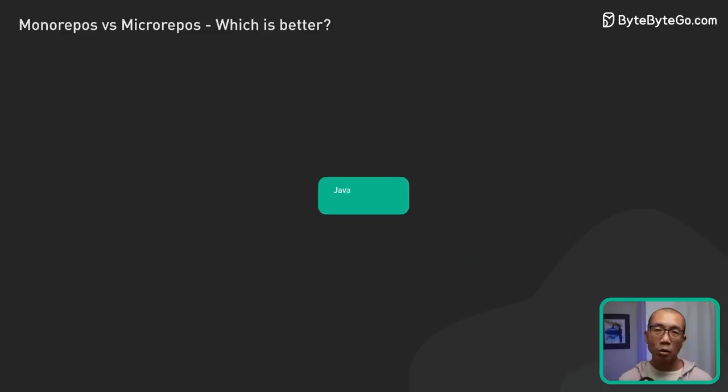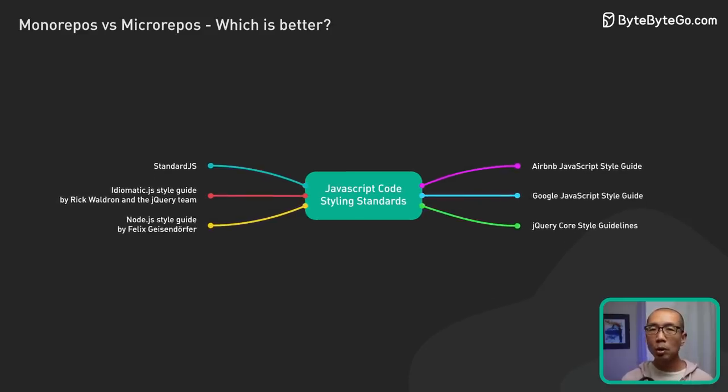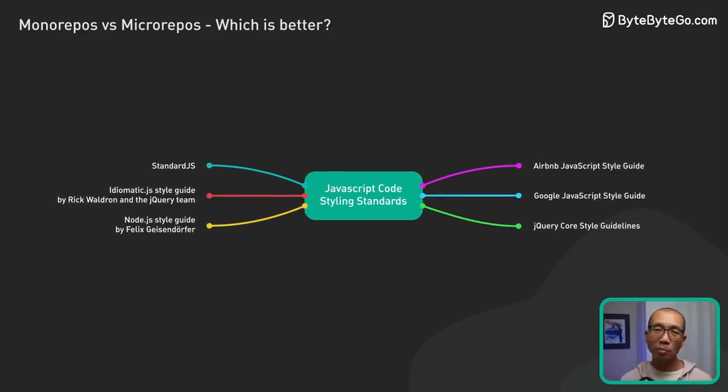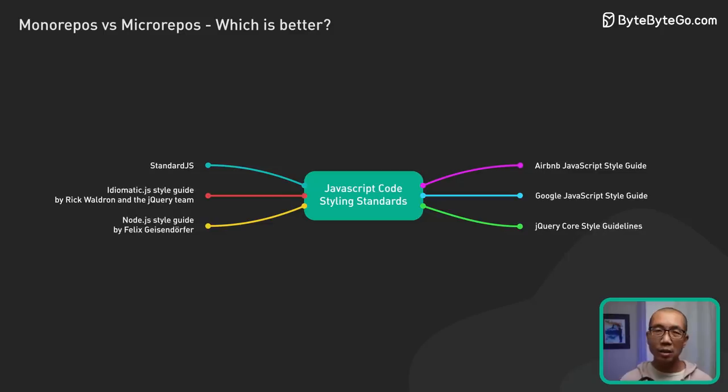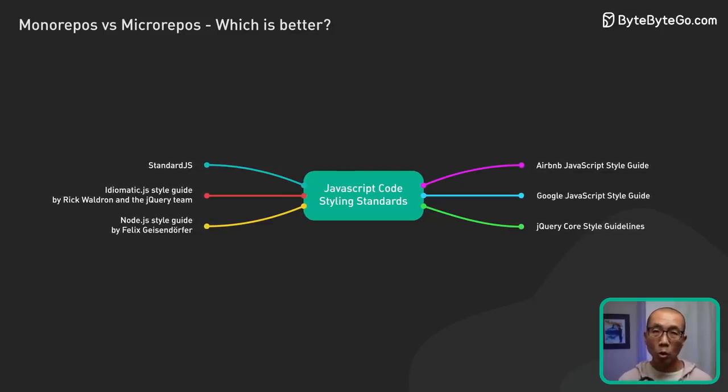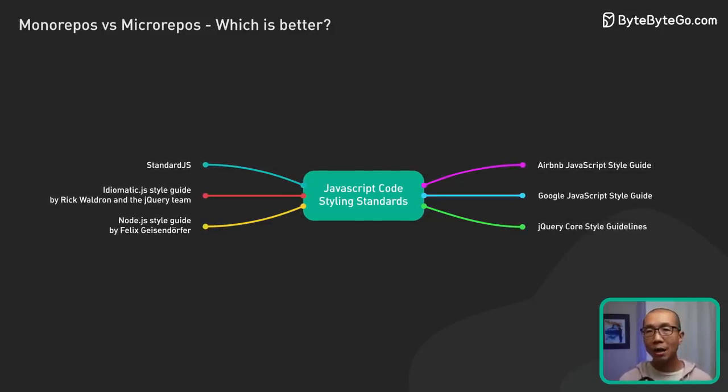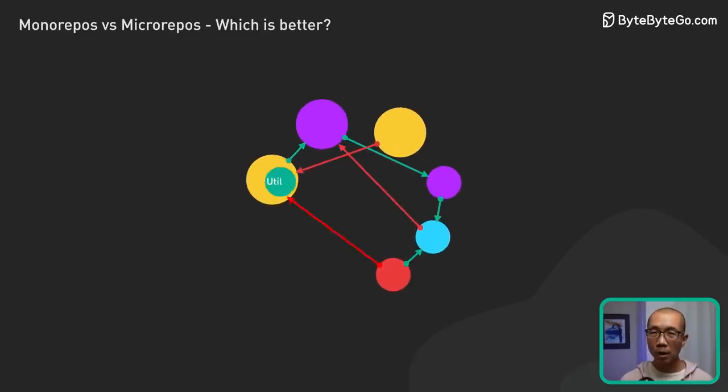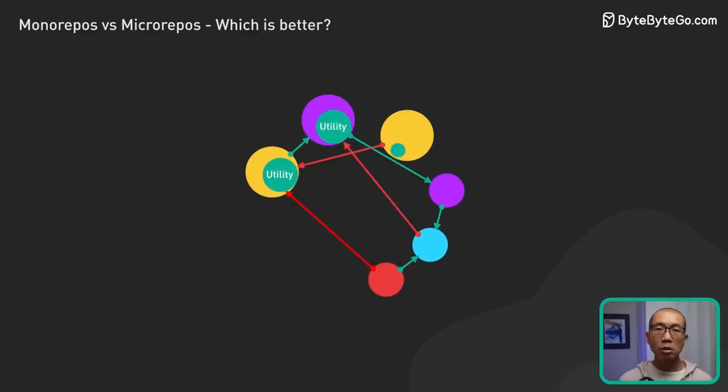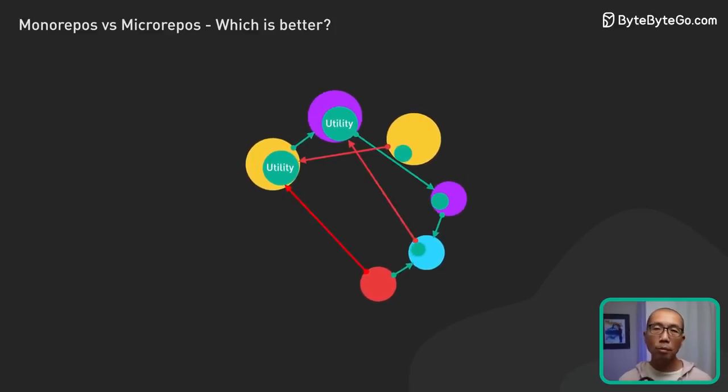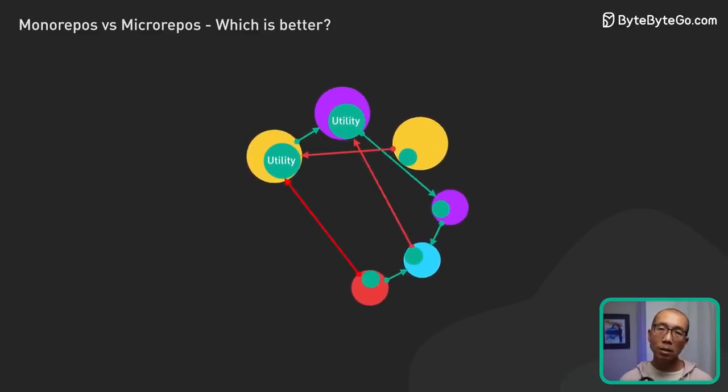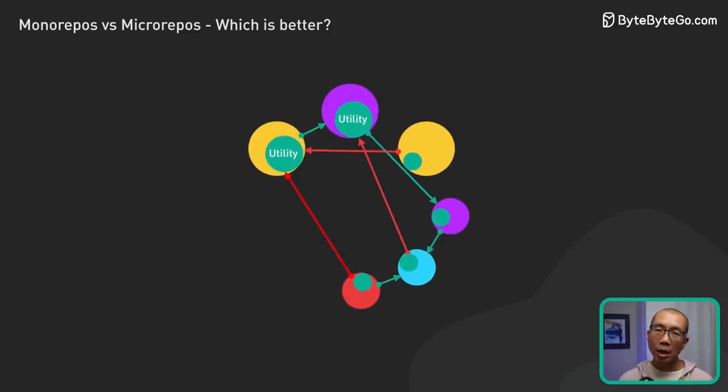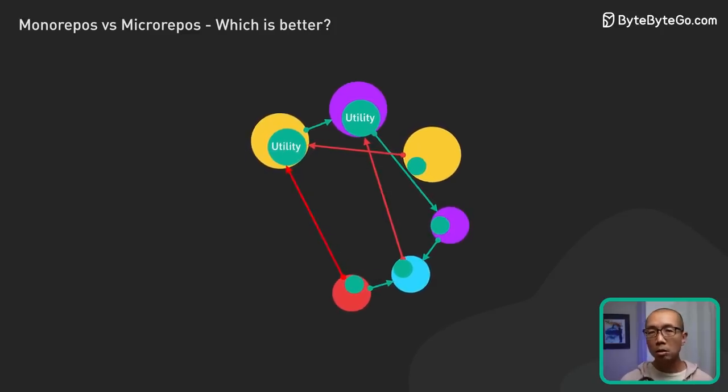Without a unified standard, code standards can vary widely. This can lead to poor code quality or inconsistent patterns. To prevent this, it's important to establish organization-wide coding guidelines. And one more thing: code duplication. Copying the same code across repos bloats the code base and can lead to bugs. To avoid this, creating shared libraries for common code can be useful.